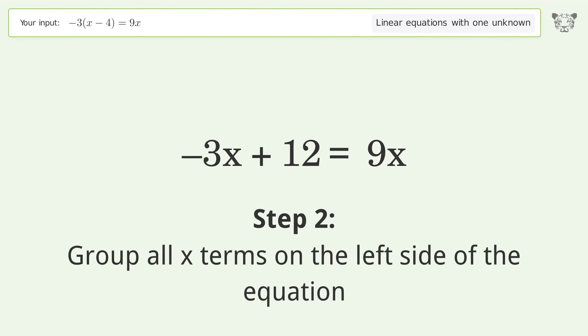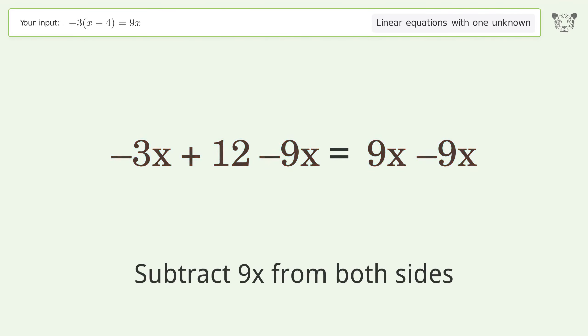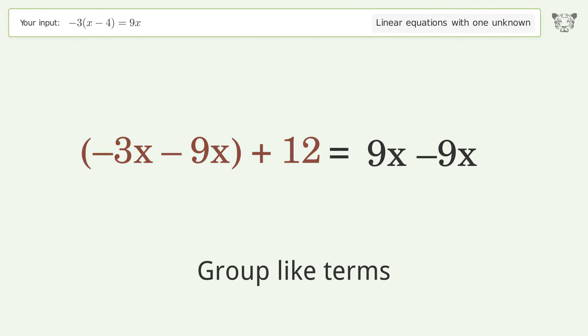Group all x terms on the left side of the equation. Subtract 9x from both sides. Group like terms. Simplify the arithmetic.